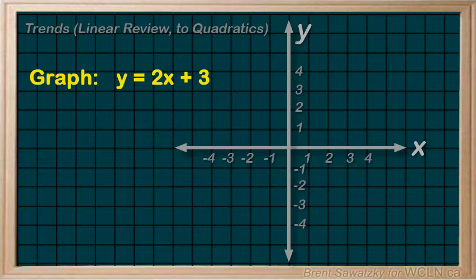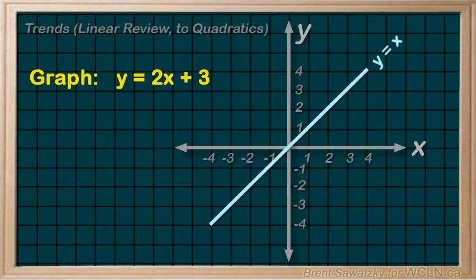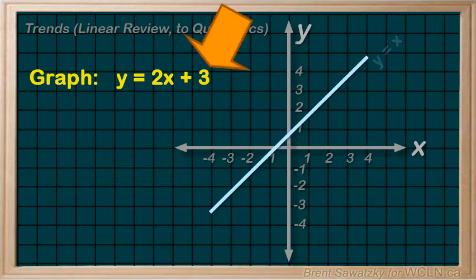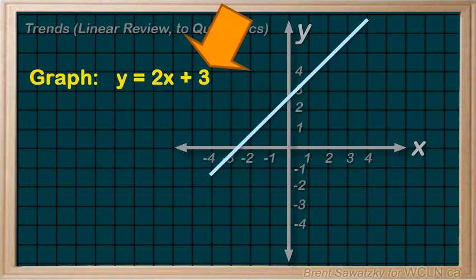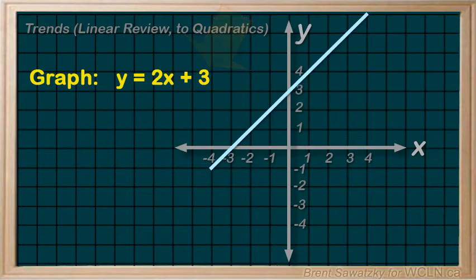Once we learned about the equation y = mx + b, we were able to quickly visualize and sketch these graphs. We start with a base graph, that is y = x, and then we use our y-intercept b at the end here to shift that line up or down. In this case, by 3.